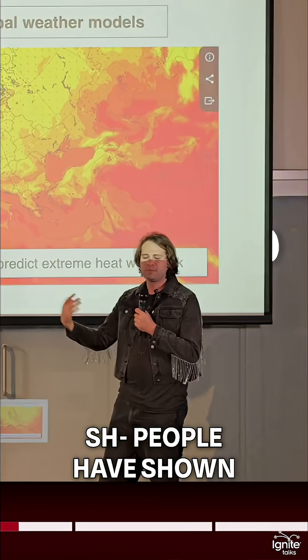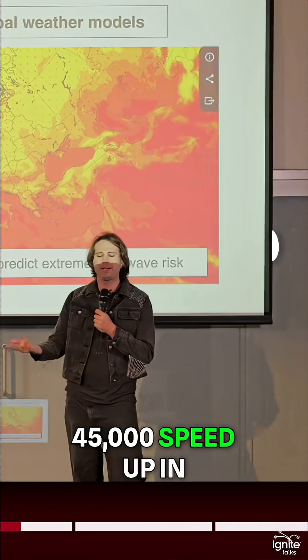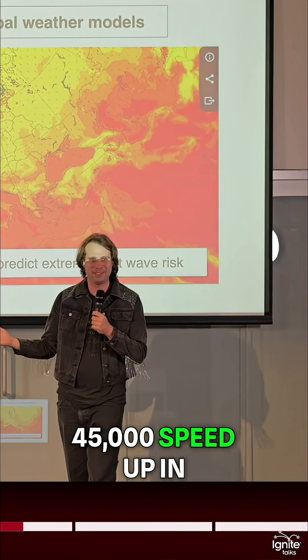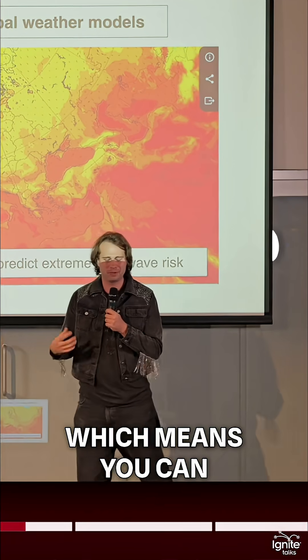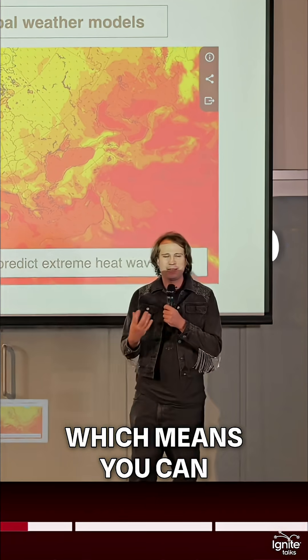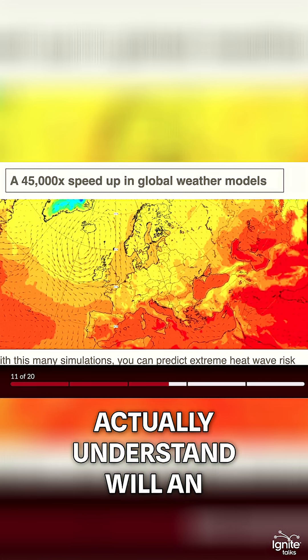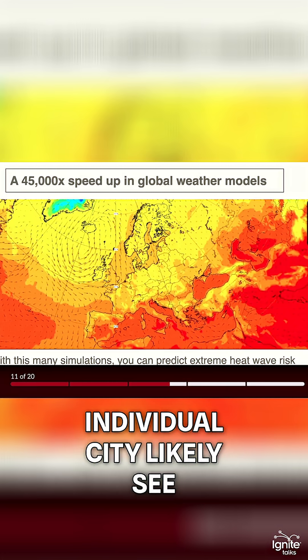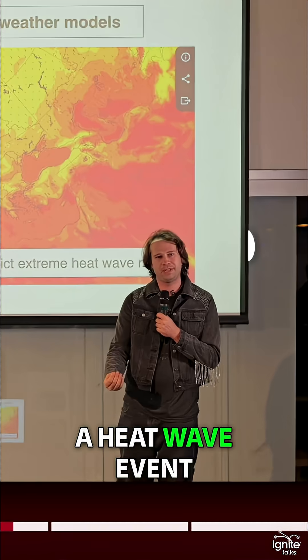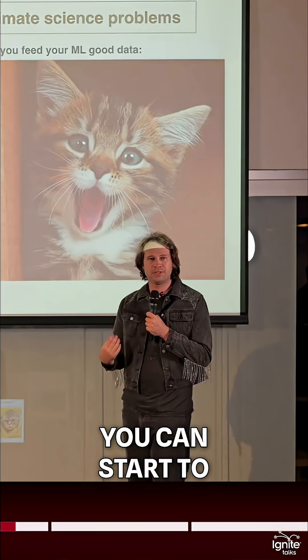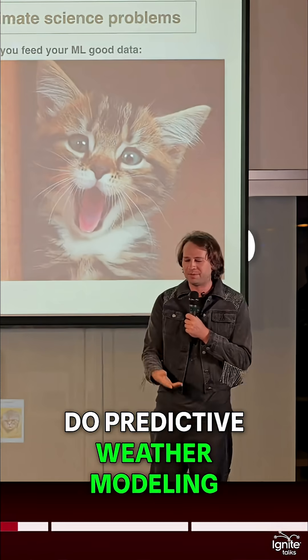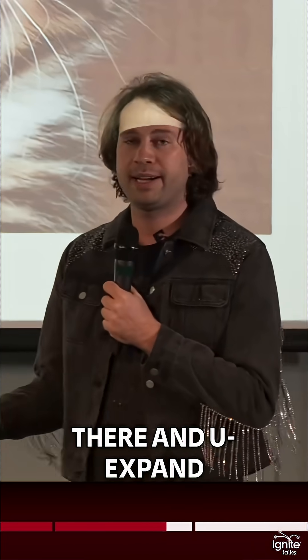People have shown a 45,000x speedup in these weather models, which means you can actually understand whether an individual city will likely see a heat wave event. You can start to do predictive weather modeling at that level of granularity.